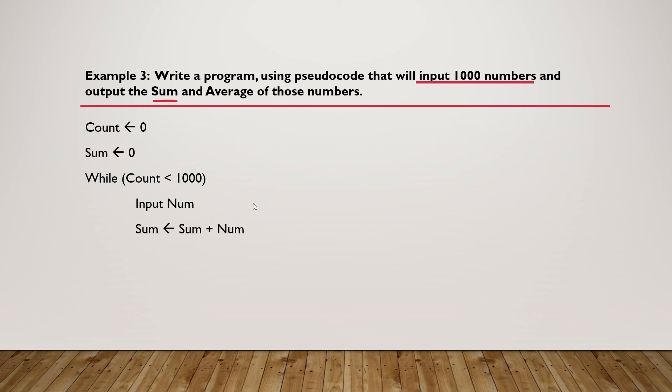Sum will be sum plus number. And we have to increment our count and end our while loop. Our average will be calculated after our loop. So average will be sum divided by 1000 and this is calculated after our while loop.